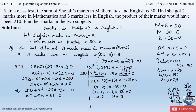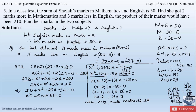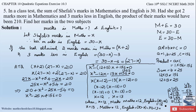We assumed x to be the marks in maths. When x = 12, marks in maths = 12 and marks in English = 30 minus 12 = 18. When x = 13, marks in maths = 13 and marks in English = 30 minus 13 = 17. So this is how we solve problem number 5. If you have any doubts, please comment below in the comment section.